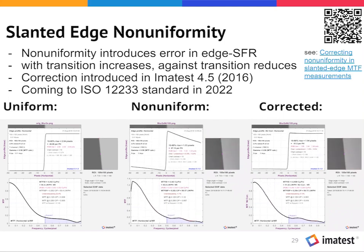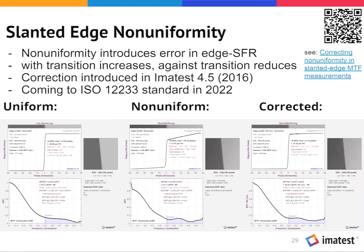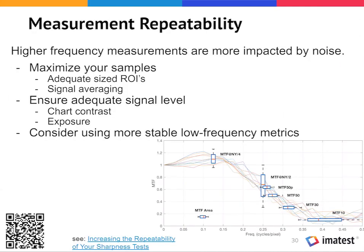This non-uniformity correction is going to be part of the upcoming ISO 12233:2022 standard, which is currently going through final revisions. Measurement repeatability affects all types of measurements — take your measurement, repeat it several times, and see if you're getting consistent results. Depending on the metric used, you may see much less repeatability. Higher frequency metrics like MTF-10 jump around a lot more, especially in the presence of noise. You can mitigate this by maximizing samples with adequate regions of interest, taking multiple exposures and signal-averaging to reduce shot noise, and ensuring adequate signal level with proper exposure and sufficient target contrast.